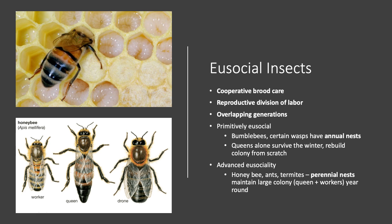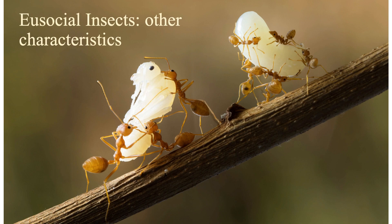Eusocial insects demonstrate cooperative brood care, which we see as beekeepers — there are lots of little mouths to feed. The reproductive division of labor gives us a large queen morphologically designed to be the sole reproductive in the colony. We also have overlapping generations in perennial colonies. We can further break down eusocial insects into primitively eusocial groups like bumblebees and certain wasps, and advanced eusocial groups like honeybees, ants, and termites with perennial nests.